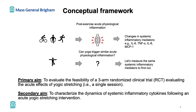The primary goal of our study was to evaluate the feasibility and acceptability of a three-arm randomized clinical trial evaluating the acute effects of yoga stress, meaning a single session. Our secondary aim was to characterize the dynamics of systemic inflammatory cytokines following an acute yoga stress intervention. The results from these aims will allow us to explore our theoretical framework in the future.